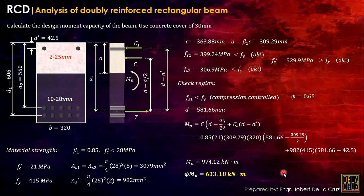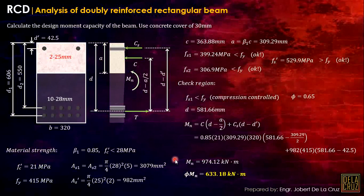To summarize: if tension bars yield, they have the same stress Fy, so we can directly use the geometric center as the effective depth. But if the tension bars do not yield, we must calculate each bar's actual stress using the strain formula, then find the effective depth by computing the plastic centroid using Varignon's theorem.